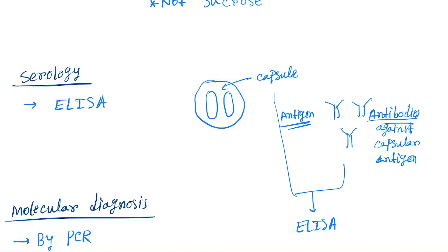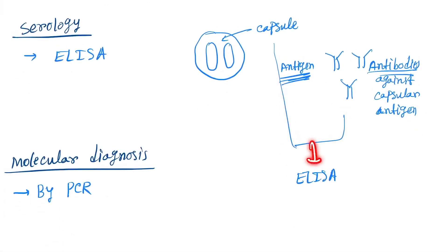This is a capsule, so capsule has different antigens. These antigens will form from capsule, and antibodies against capsular antigen are made, so they will react in the ELISA method. Now molecular diagnosis by PCR.